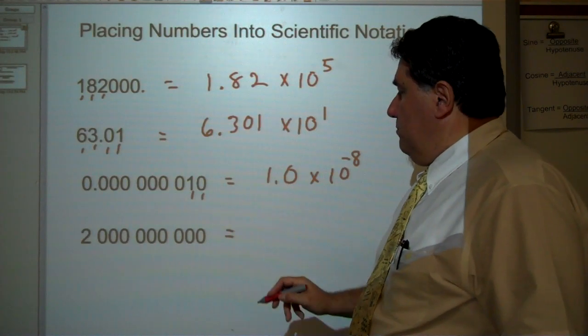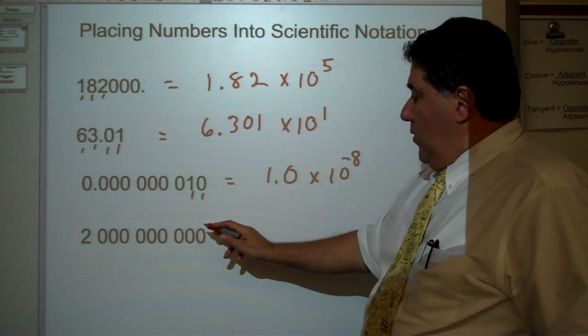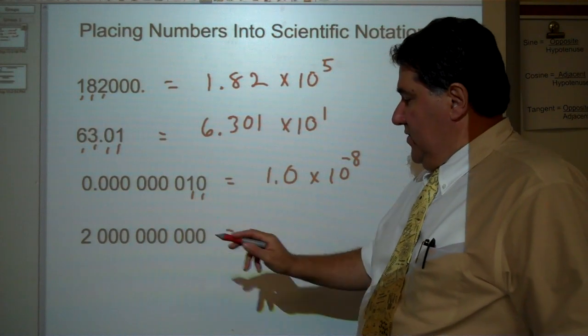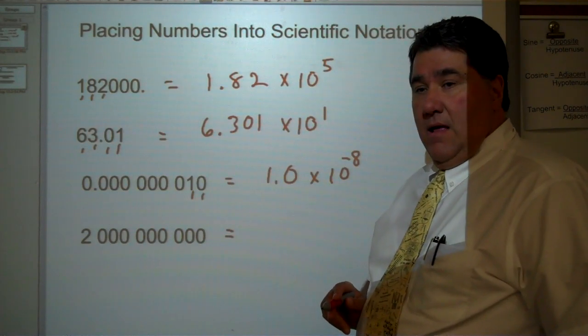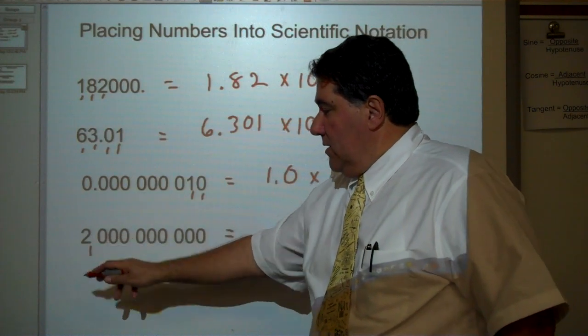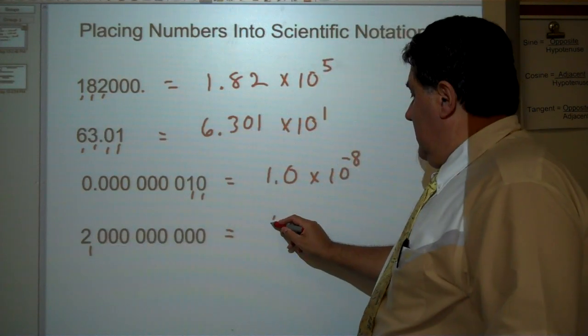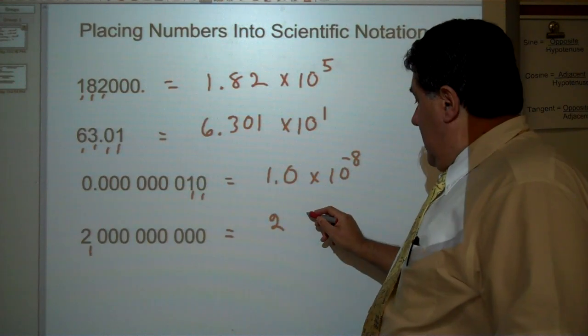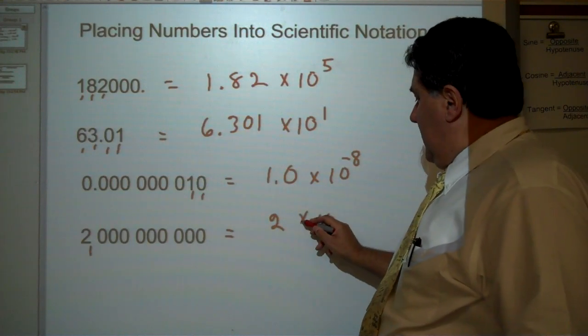The final one, we have 2 billion. So we have 2 with a bunch of zeros right after. That's the point assumed to be at the end. The number of significant figures here, according to our rules, is only 1. There's only the 1 digit, and that's the 2.